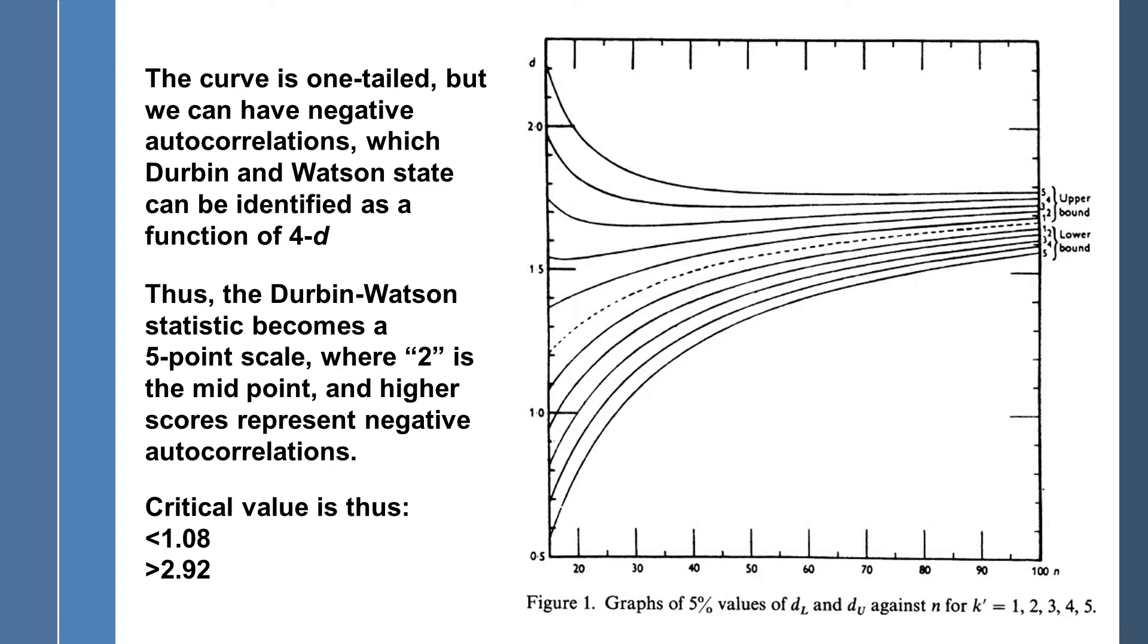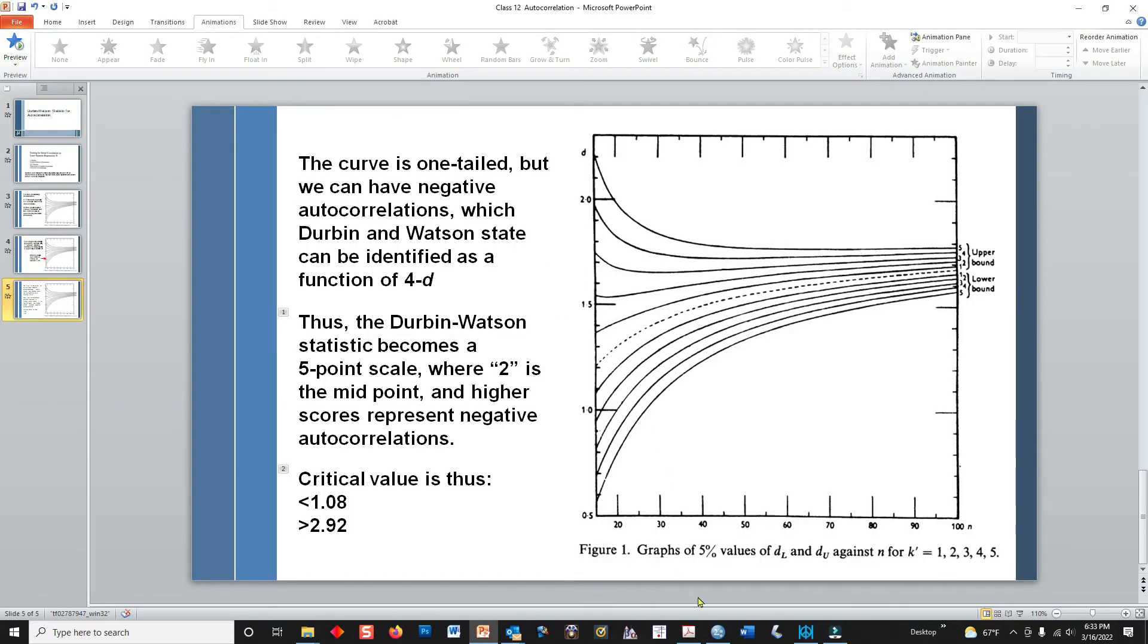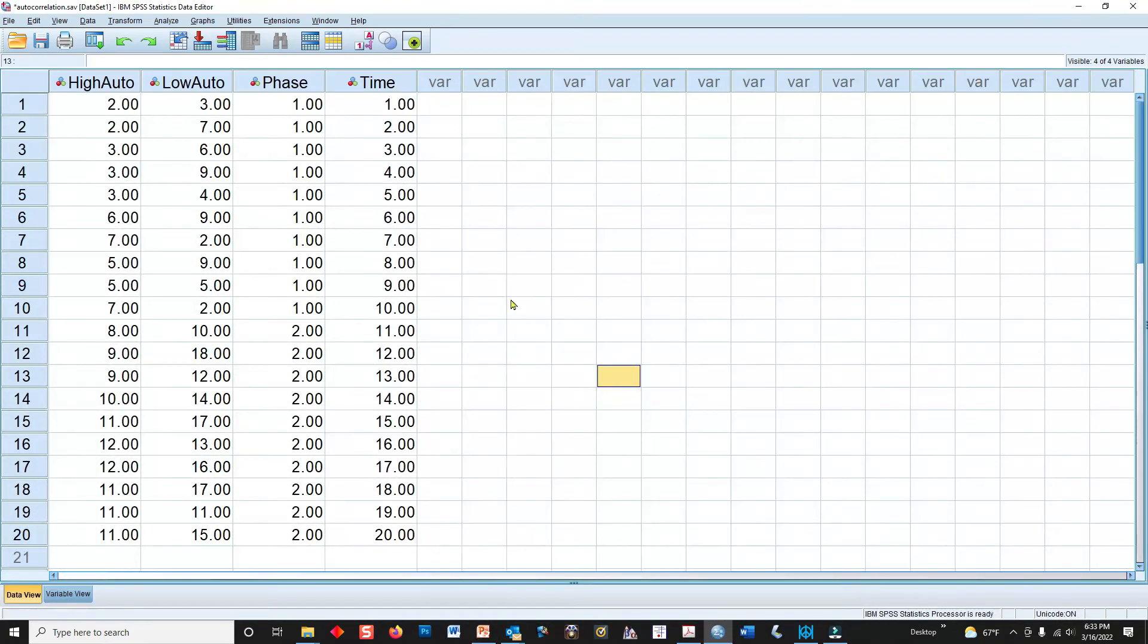So now, let me give you an example with some actual numbers. Let's go over to SPSS. I've got a file here with some fake data. I've got one variable that's highly autocorrelated, and one variable that's got low levels of autocorrelation. I'm not going to use phase here. That's from a different video.